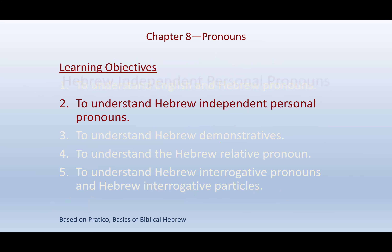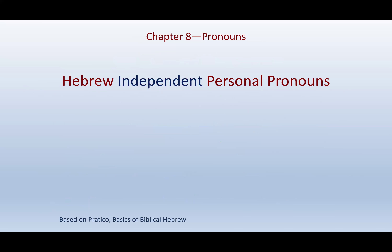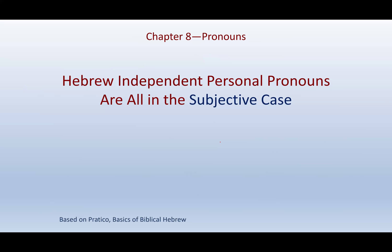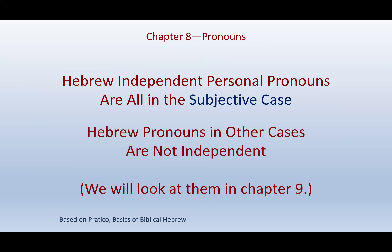Let's look at Hebrew independent personal pronouns. Why do we call them independent? Because they stand alone — they're not attached to the word itself. When we get into the next chapter, we'll look at pronominal suffixes, which are attached to the word. These are independent personal pronouns. They inflect for person, gender, and number. All independent personal pronouns in Hebrew are in the subjective case — they're going to be the subject. Hebrew pronouns in other cases are attached to words, and we'll look at them in chapter nine.